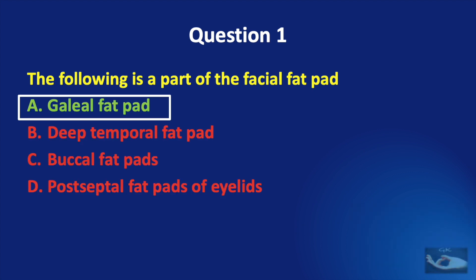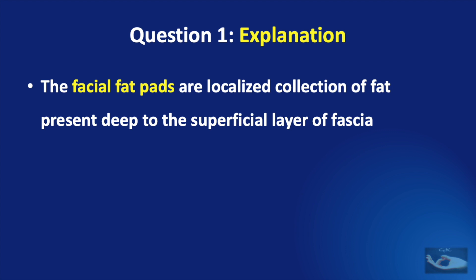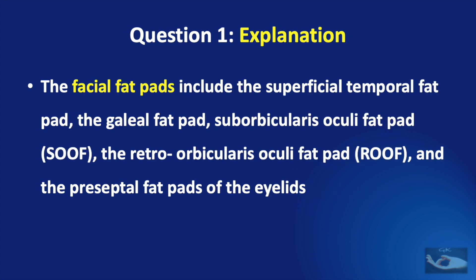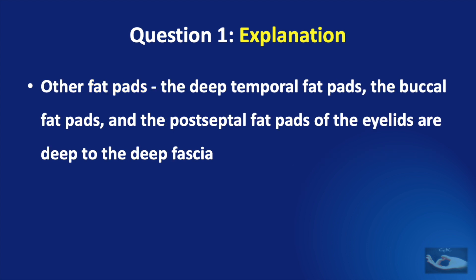The correct answer is Gallial fat pad. The facial fat pads are localized collections of fat present deep to the superficial layer of the fascia. They are separate anatomically and histologically from the subcutaneous fat, which is present between the skin and the superficial layer of fascia. The facial fat pads include the superficial temporal fat pad, the gallial fat pad, the suborbicularis oculi fat pad (SOOF), the retroorbicularis oculi fat pad (ROOF), and the preseptal fat pads of the eyelids. The deep temporal fat pads, buccal fat pads, and post-septal fat pads of the eyelids are deep to the deep fascia.